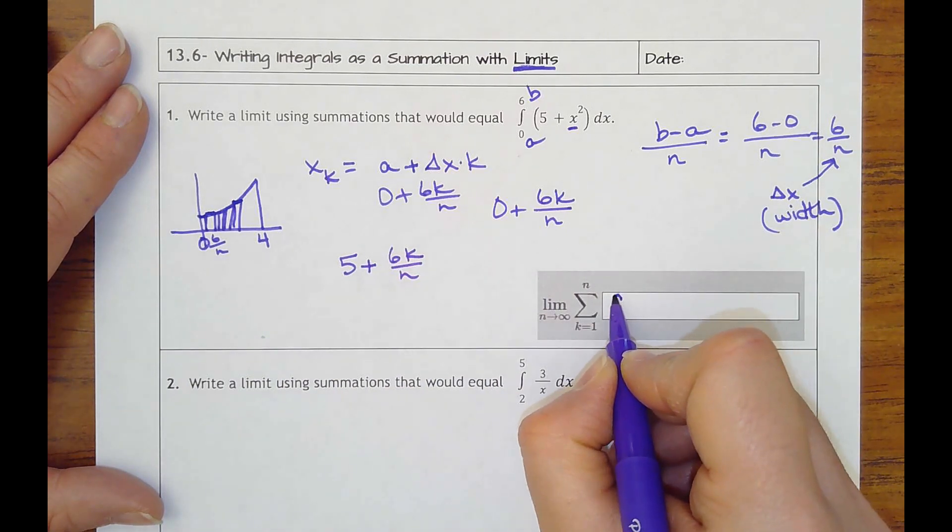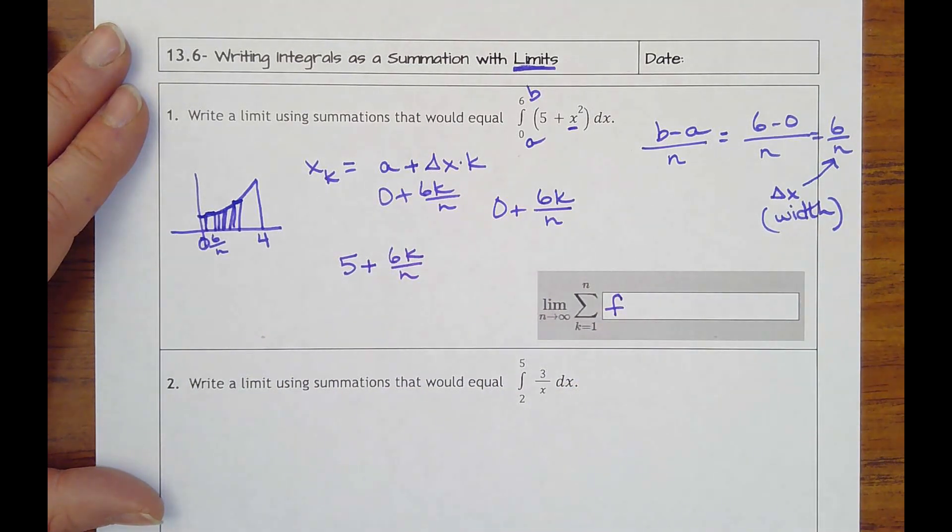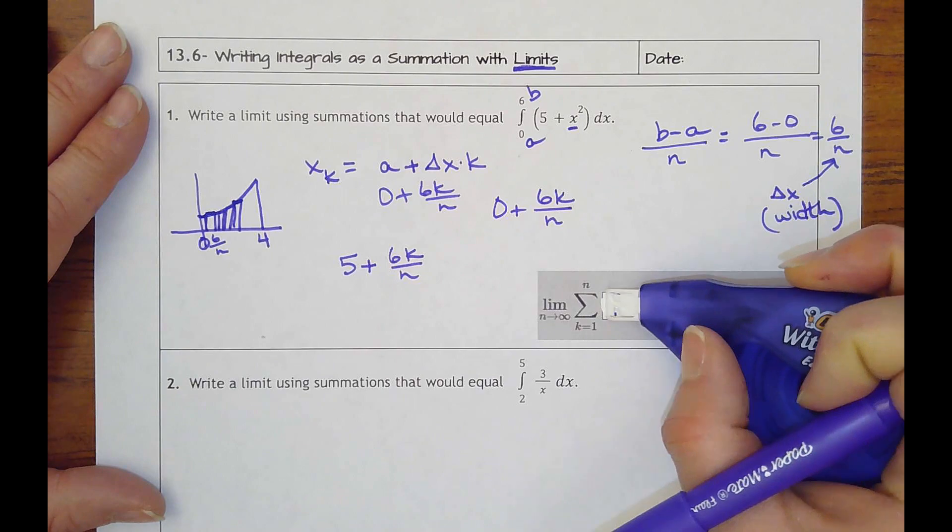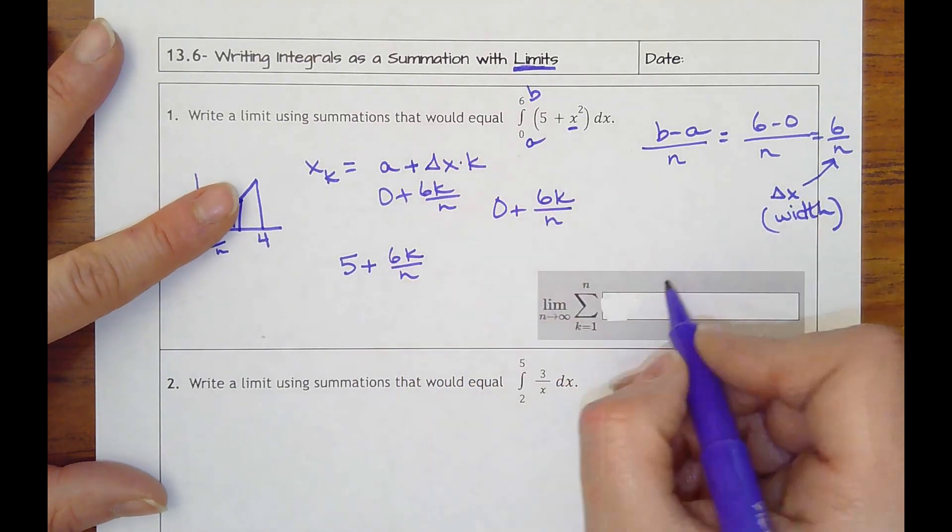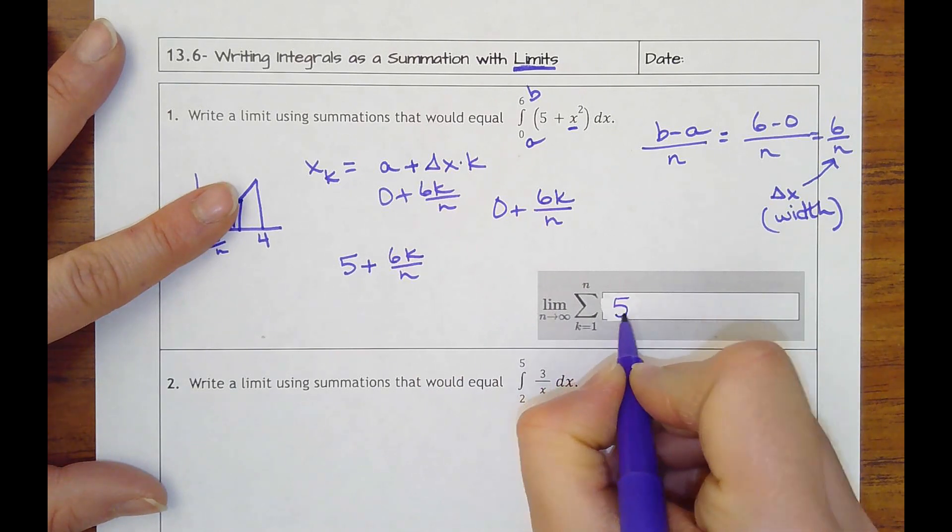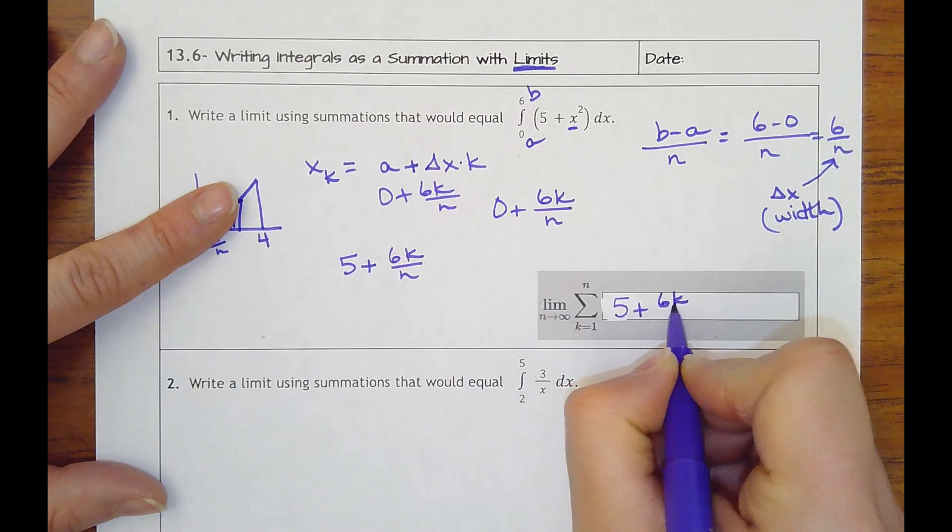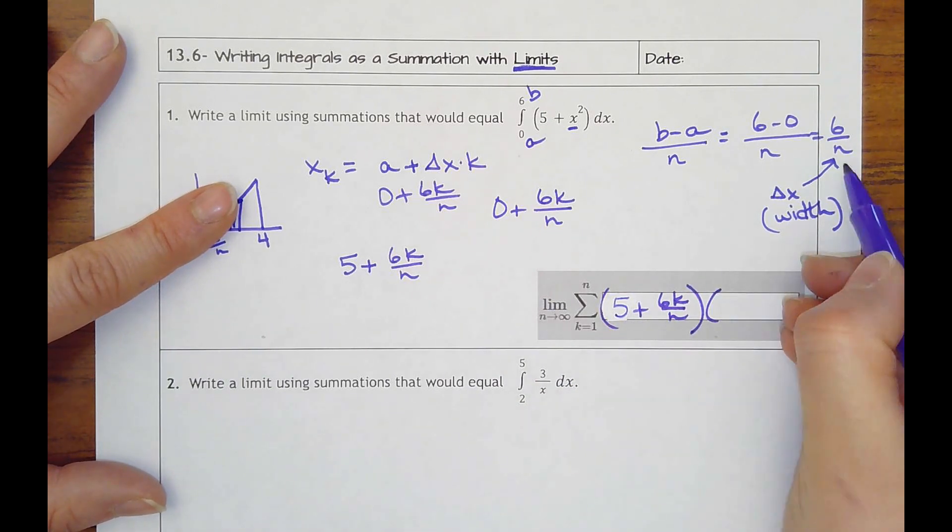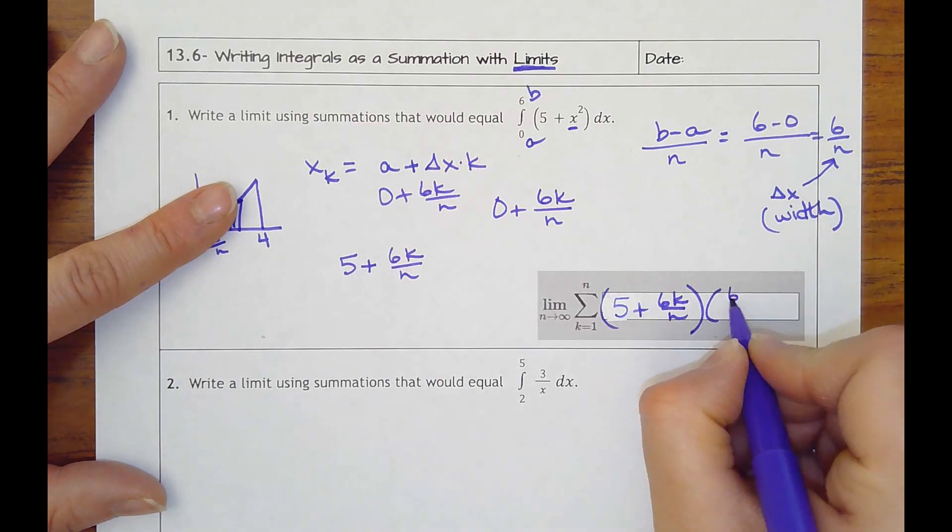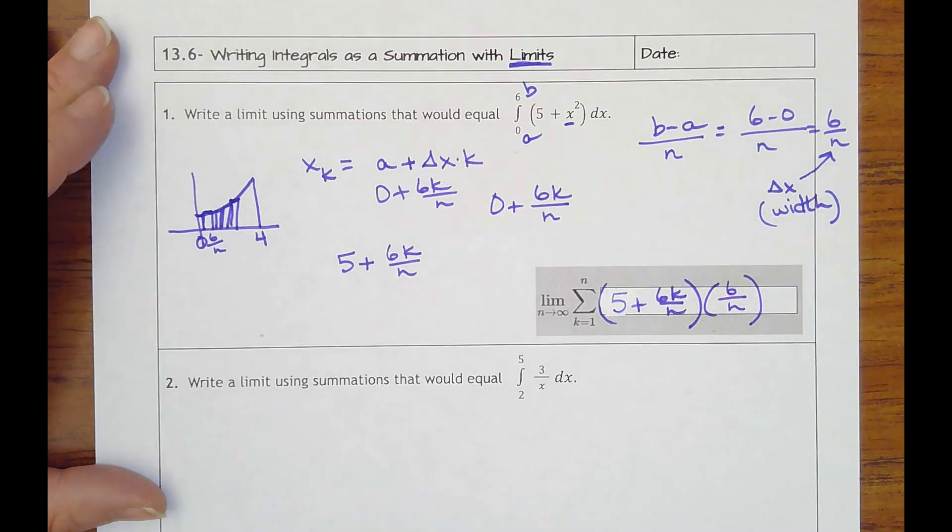So I would put f of—let me back that up. I don't need f because I'm actually plugging it into the function. I'm doing f of x sub k, so I would have 5 plus 6k over n. That's the height of every rectangle times what my width was, which is the 6 over n. That's how they want you to put it in. It'll get easier the more you see.